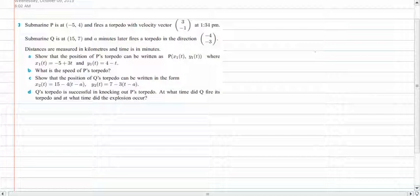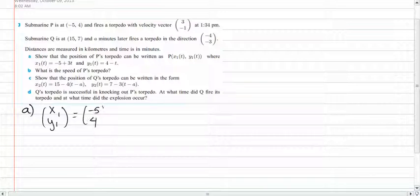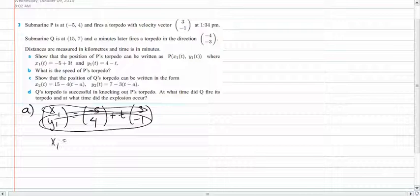Distances are measured in kilometers and time is in minutes. For part A, we have to show that the position of P's torpedo can be written as P of X1T comma Y1T, where X1T equals negative 5 plus 3T and Y1T equals 4 minus T. We know the vector equation is X1 over Y1 equals negative 5 over 4 plus T times 3 over negative 1. All we need to do is split this up into the two parametric equations, which is X1 equals negative 5 plus 3T and Y1 equals 4 minus T.